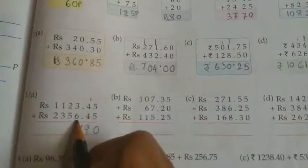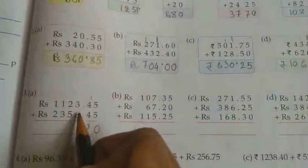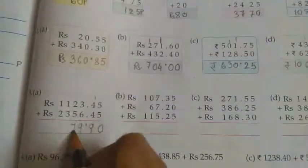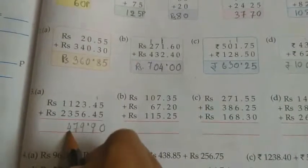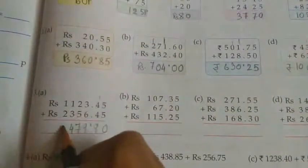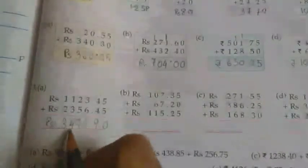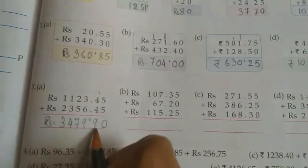Now come to rupees section. 3 plus 6 equals 9, 5 plus 2 equals 7. Then 1 plus 2 equals 3, 1 plus 2 equals 3. So answer is 3,479 rupees 90 paise.